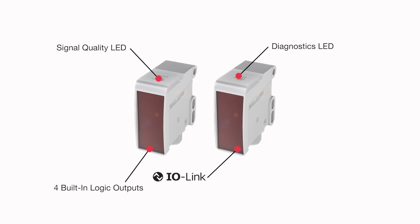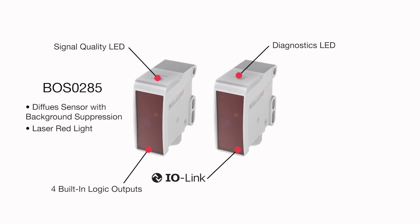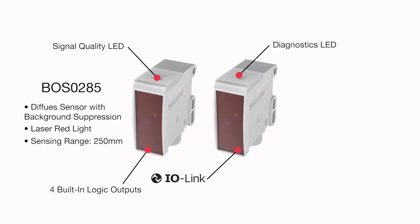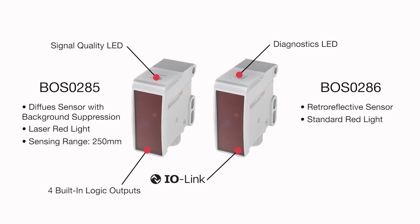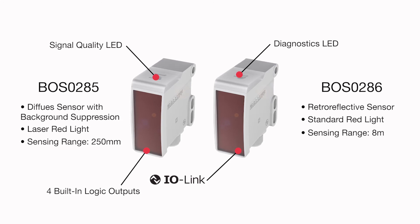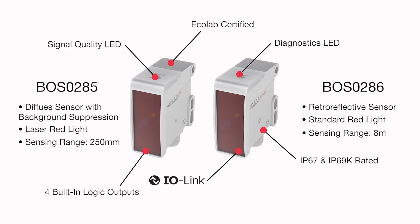There are two models. The BOS-0285 is a diffuse sensor with background suppression, with a laser red light making it ideal for small part detection, with a sensing range of 250 millimeters. The BOS-0286 is a retroreflective sensor with a standard LED light source, which can reliably detect clear objects with a sensing range of up to 8 meters. Both have Ecolab certification, as well as IP67 and IP69K ratings.